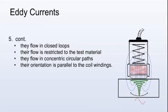Eddy currents flow in closed loops and their flow is restricted to the test material. Eddy currents flow in concentric circular paths with their orientation parallel to the coil windings.